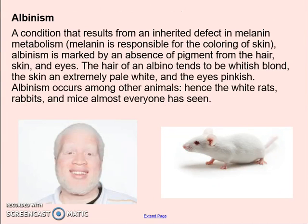Albinism is a condition where people have a defect in their melanin — there's an absence of pigment from the hair, skin, and eyes, so they tend to be very light with extremely pale skin and pinkish eyes. For a human, this is probably an example of a neutral mutation since it doesn't change anything in their daily life. However, for animals, if you live somewhere dark or rely on camouflage from predators, albinism could be a harmful mutation because you'd be easier to spot. But if you live in a snowy environment like the tundra, albinism could actually be a beneficial mutation because you'd blend in more with your surroundings.